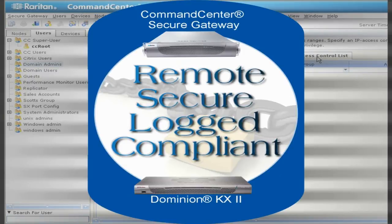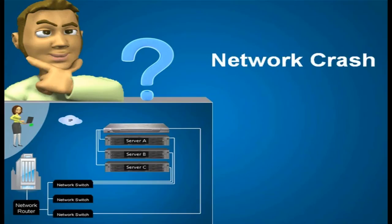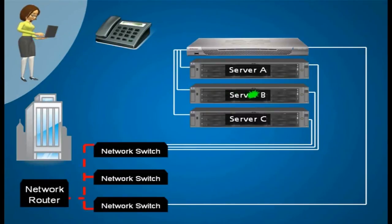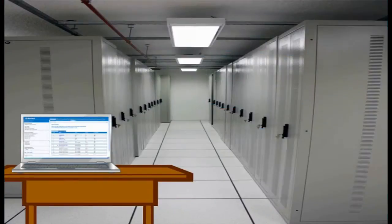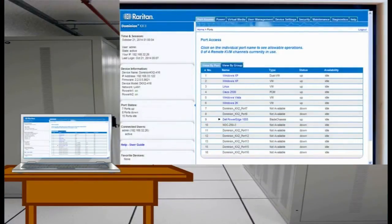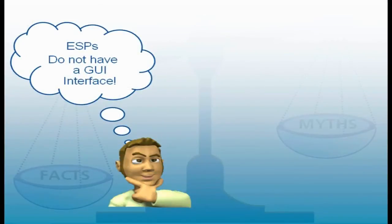Both the Command Center and the KX2 enable remote, secure, logged, and compliant access from either across the room or across the globe. So what happens if the network crashes? KVM and serial switches can be configured with modem access for disaster recovery. If you need to access the switch while you're in the data center, Raritan has created the industry's first fully-featured local GUI for easy admin management when using the local port. Embedded service processors don't offer those abilities.